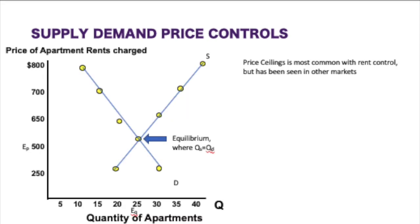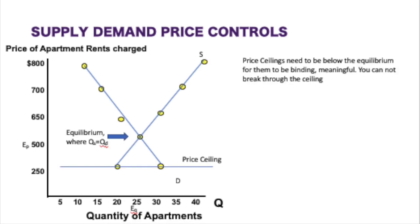Here we have a model for apartment rents. The most common price ceiling that governments impose is ceilings on rents. Here we have an equilibrium point where quantity supplied equals quantity demanded at $500 — 25 apartments where demand equals supply. The government comes in and sets a price ceiling at $250, meaning you cannot charge above $250. For the price ceiling to be binding or meaningful, it needs to be below the equilibrium point.